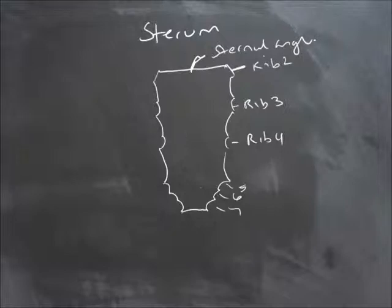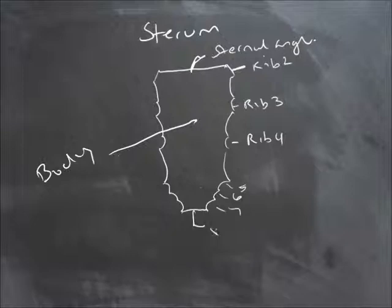This part here, this main part of the sternum, is called the body. And this part here is called the xipho-sternal joint, because this is where the xiphoid process articulates with the sternum. And this is another synovial non-movable joint.